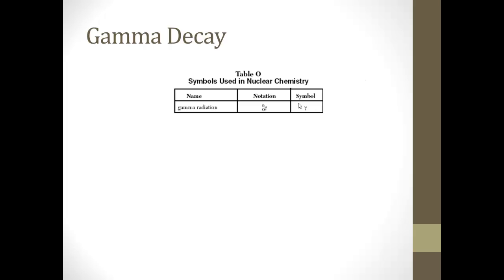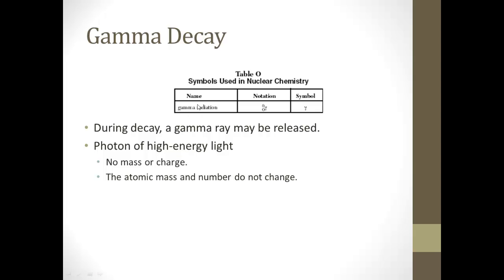All right, so finally, gamma decay. It's not going to really turn into something because it's usually going to happen in conjunction with something else. Since the nucleus has energy levels just like electrons, but these involve a lot more energy. And as the nucleus, something decays in the nucleus becomes more stable, a gamma ray can frequently be released. It's high energy, has no mass, has no charge. It can penetrate into human tissue or whatever and actually cause an awful lot of damage. So a gamma ray is really, really bad. But it's a photon of high energy or light, doesn't have any mass or charge, and the atomic mass and the atomic number don't change when we're dealing with gamma decay.